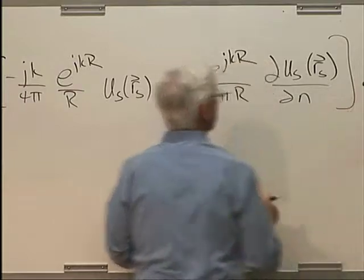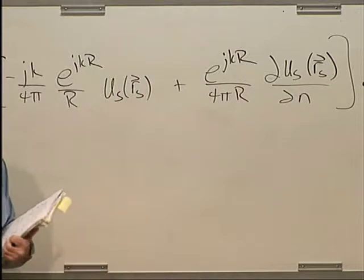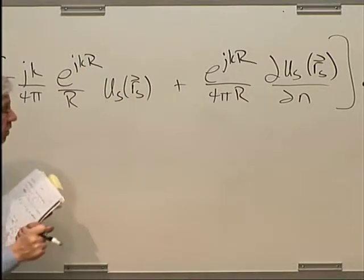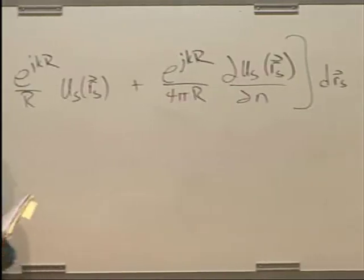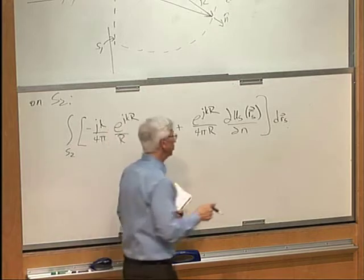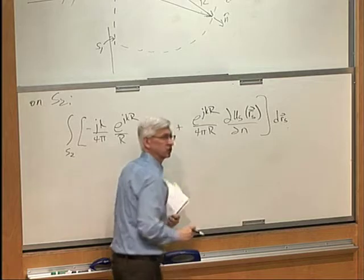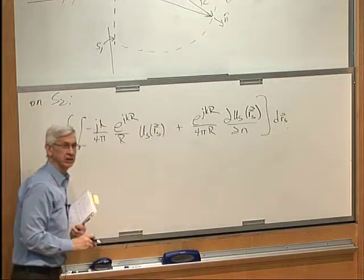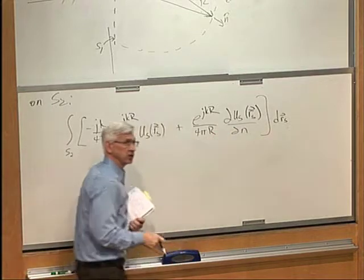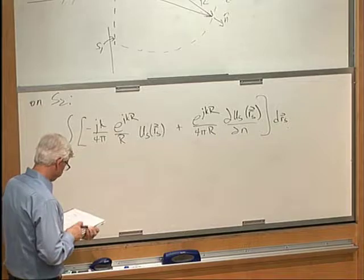Now, the reason we have to include this term is because the Green's function was designed to be 0 over S1 but not S2. So, over S2, that large partial sphere, we can't say that G is equal to 0. So, we have to keep that partial derivative of the incident field on S2 in the equation for the surface integral.